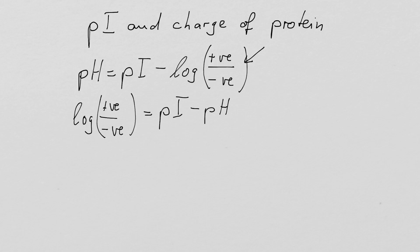And what we want to do is we want to adjust the pH so that we either have lots of positive or lots of negative charges because that then allows us to purify the protein.